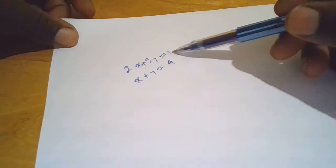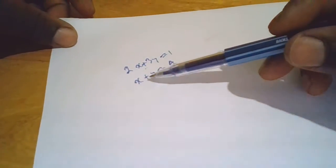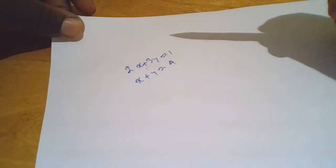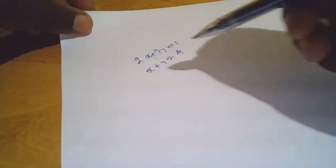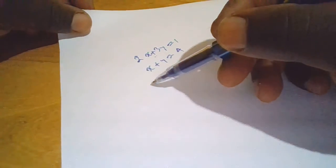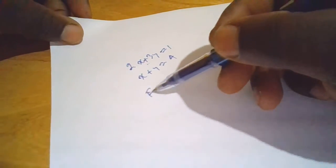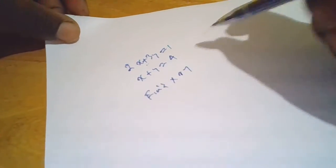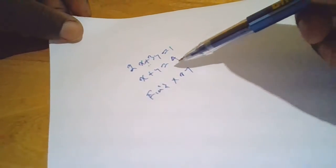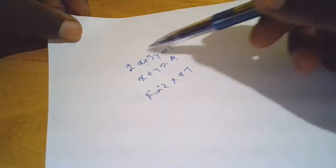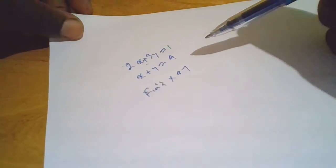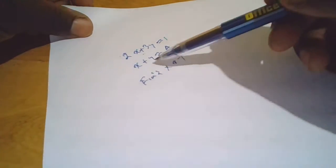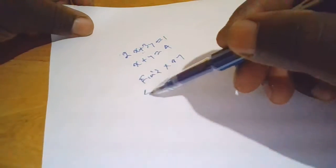x plus 3y equals 1 and x plus y equals 4. So you want us to find the value of y and x in these simultaneous equations.